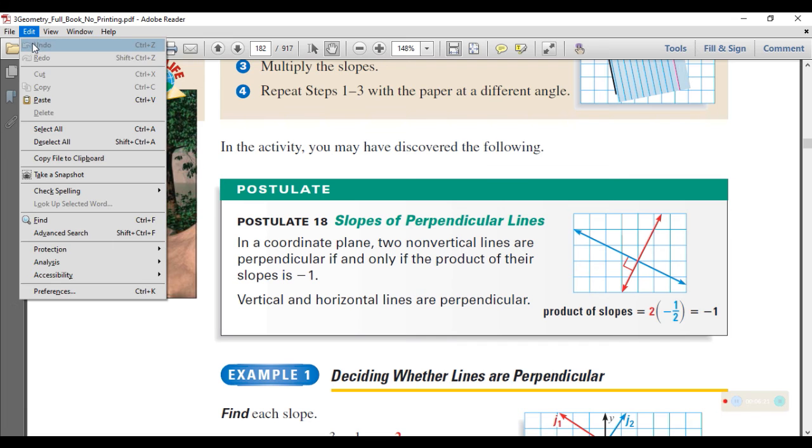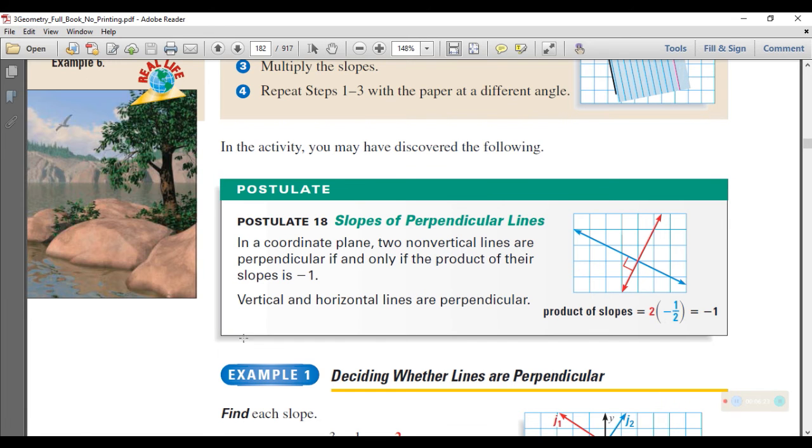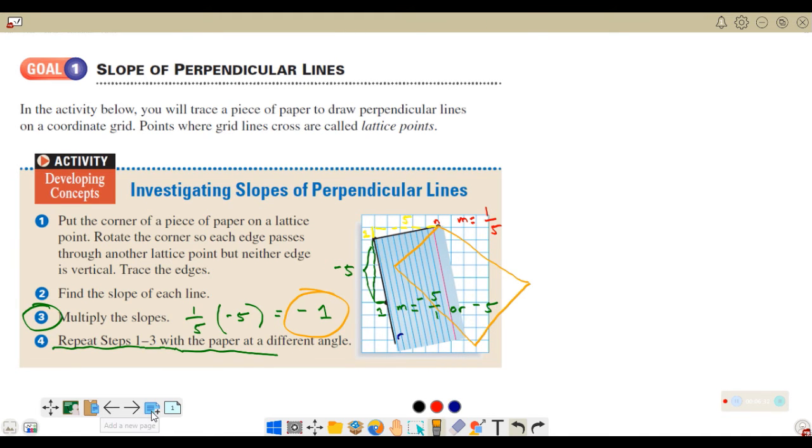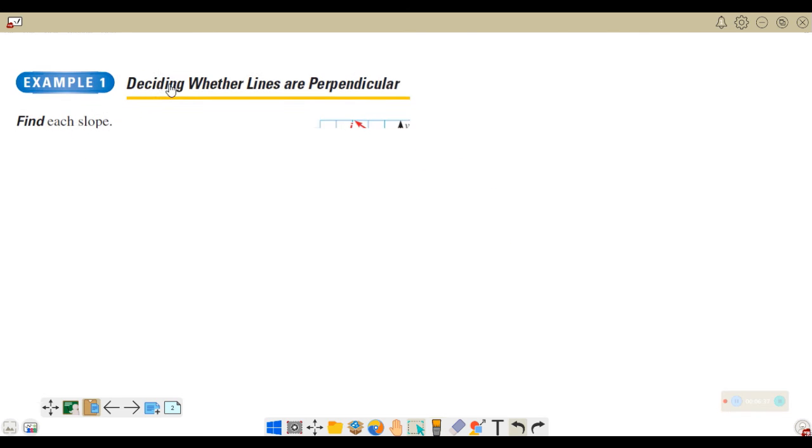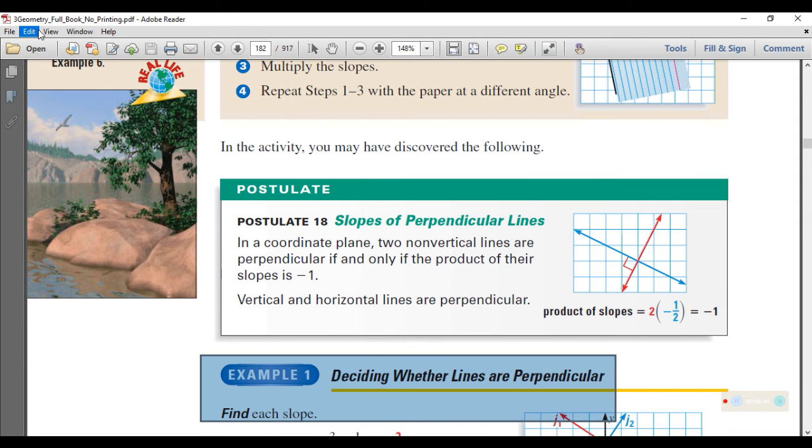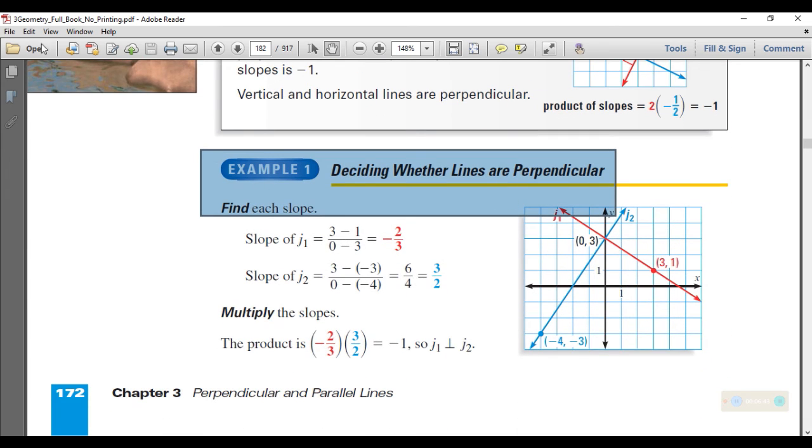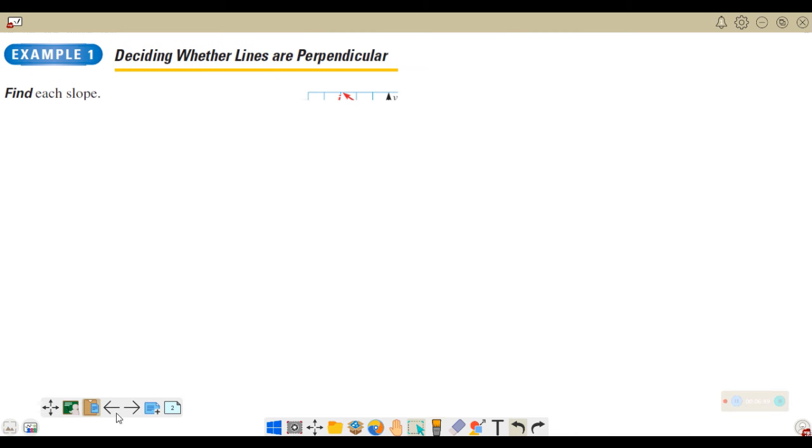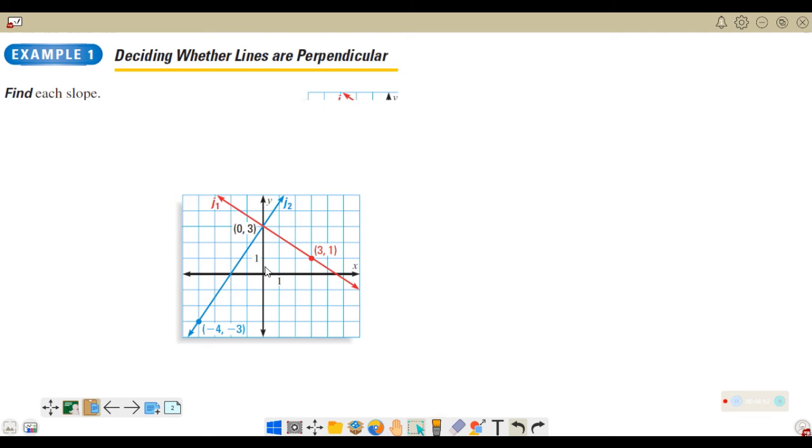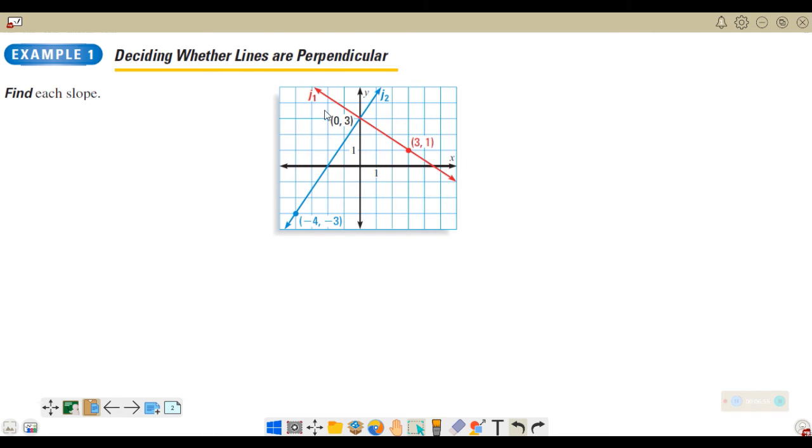Now let's perform this activity: deciding whether the lines are perpendicular. We have to find the slope of each of the lines and then determine which among them are perpendicular. We will check if J₁ and J₂ are perpendicular. Let's find the slope of J₁.